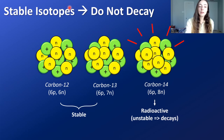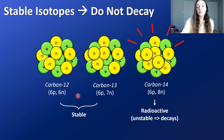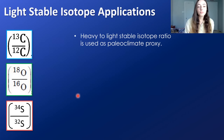Stable isotopes like carbon-12 and carbon-13 do not decay — they remain stable over time. So how can we use them? We can't use them for dating because they're not decaying like a clock, but we can use them in other ways, such as for paleoclimate reconstruction.